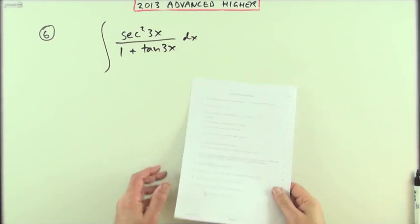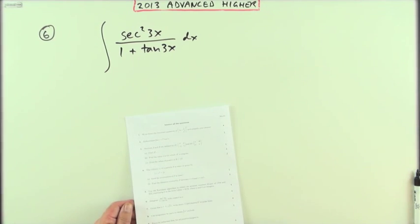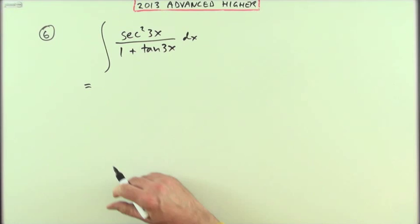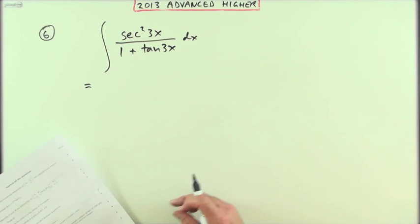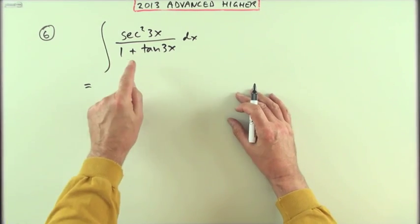Number six from the 2013 advanced term math integration. It may look like a substitution but it's not. This can be done just by inspection. You could just write the answer down straight away and get four marks, but I suspect maybe they'd want a bit more justification.